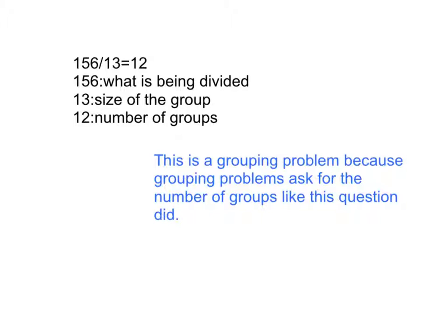The computation of this problem is 156 divided by 13, which equals 12. 156 identifies what is being divided, 13 identifies the size of the group, and 12 identifies the number of groups.